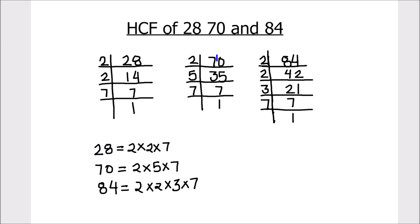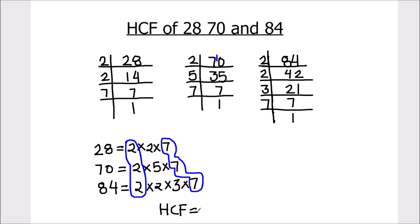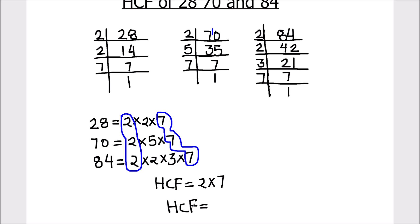Now we are going to find the common factors between the numbers. We can see that number 2 is common to all three numbers, so we are going to circle that. The other common factor is number 7, which is also common to all three numbers. So the two common factors are 2 and 7, and to find the HCF we take the product of these common factors. So 2 times 7 gives us the HCF, and the HCF is 14.